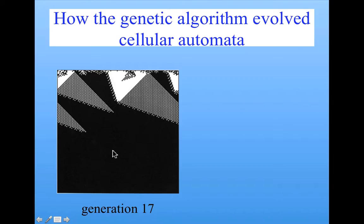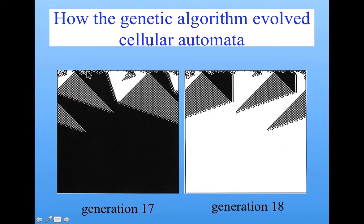However, its fitness was much lower than its child at Generation 18. And in fact, this pattern, this initial pattern, has a majority of white cells, so Generation 17 is getting it wrong, whereas Generation 18 is getting it right. So what's the difference?